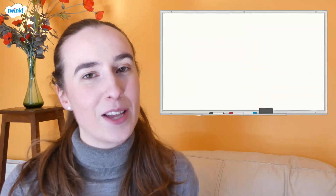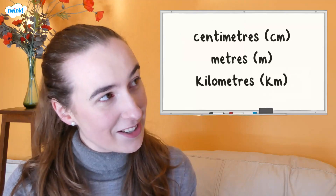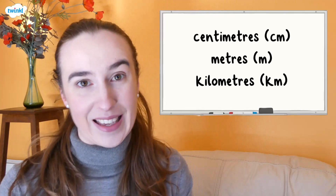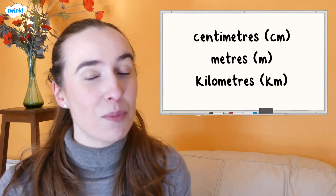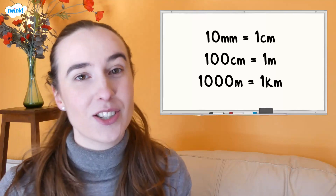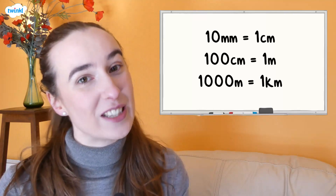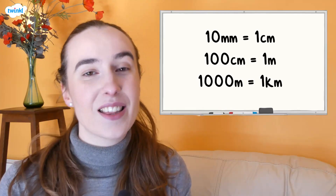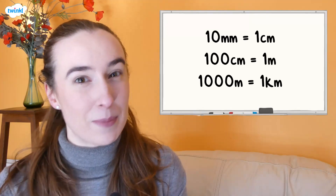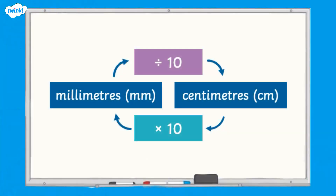Let's have a look at some metric units of length: centimetres, metres, and kilometres, abbreviated as shown. Now let's look at the relationship between measurements — we call these conversions. There are 10 millimetres in one centimetre, 100 centimetres in one metre, and 1000 metres in one kilometre. To convert millimetres to centimetres, we divide by 10. To convert centimetres to millimetres, we multiply by 10.